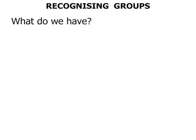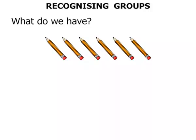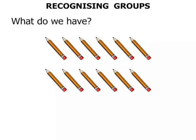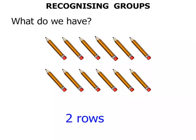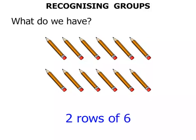What do we have? We've got some pencils there. One row. Another row of pencils. So certainly we've got two rows. But I wonder how many in each row. Let's just count the top row: one, two, three, four, five, six. We've got six pencils in each row. So we've got two rows of six. There were six in each row.